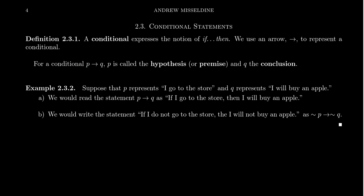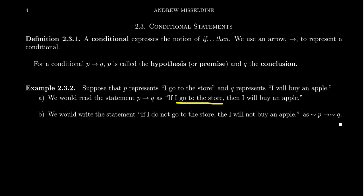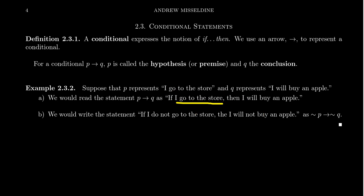Let's make sure we understand symbolically how to work with conditionals. Suppose P is the statement 'I go to the store,' and Q is the statement 'I will buy an apple.' Then the conditional P implies Q reads in regular English as: 'If I go to the store, then I will buy the apple.' P is the hypothesis of this conditional and Q is the conclusion. The order does matter.